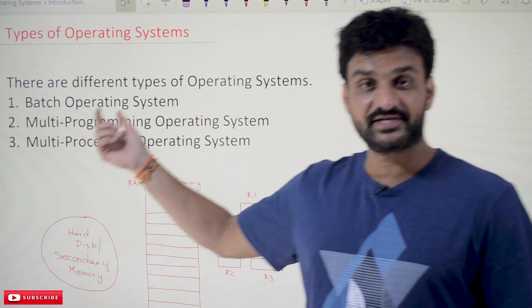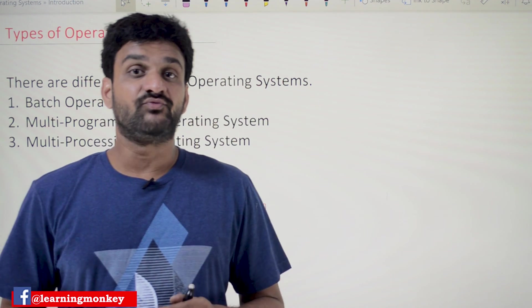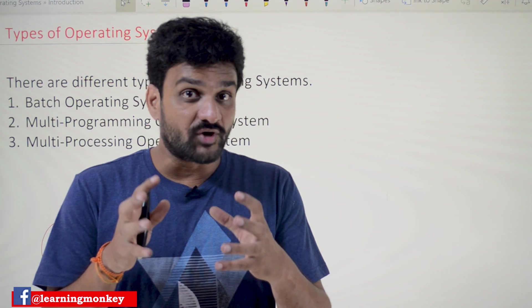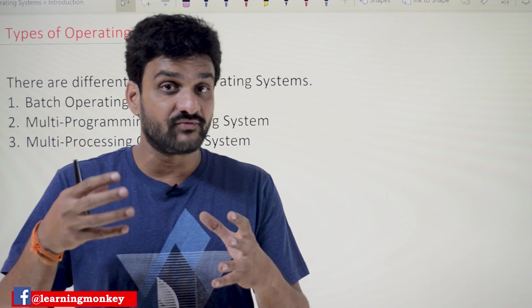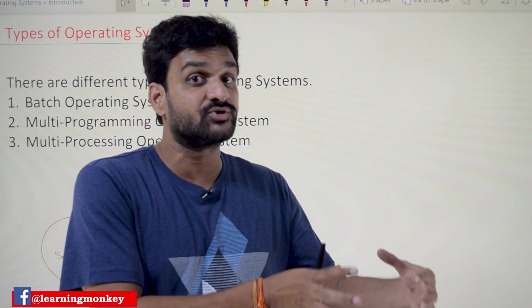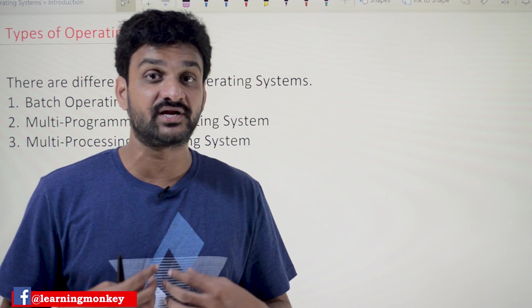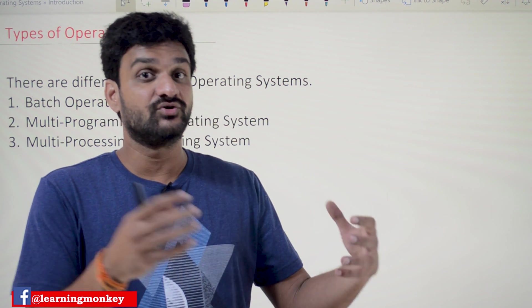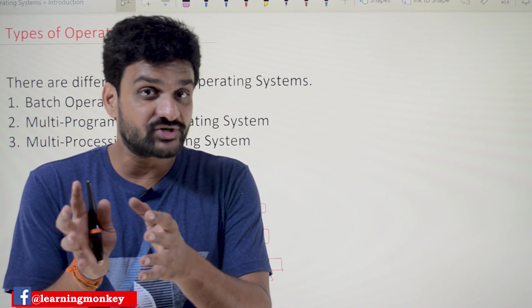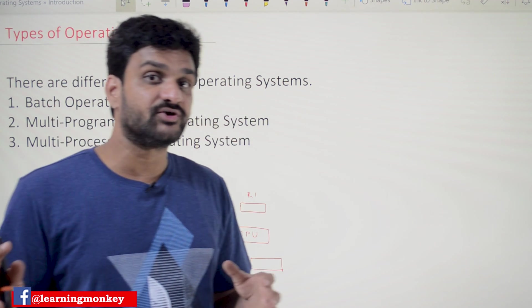The batch operating system is a very old type of operating system. What happens in a batch operating system is the program that we want to execute has to be given to the computer operator. We, as a programmer or as the user of the computer, cannot directly access the computer. So we are going to have an operator, and the program to be executed has to be provided to the operator.